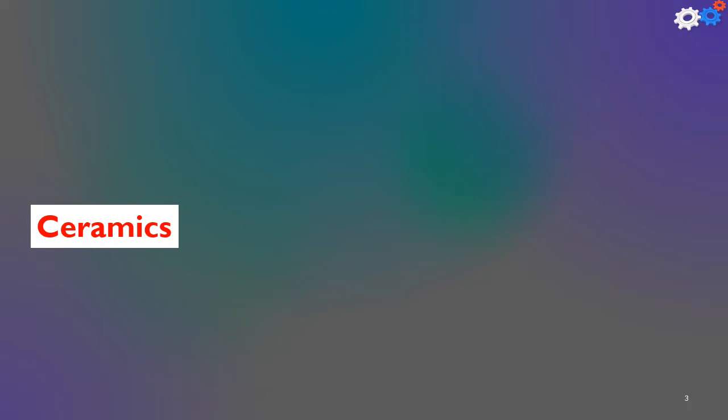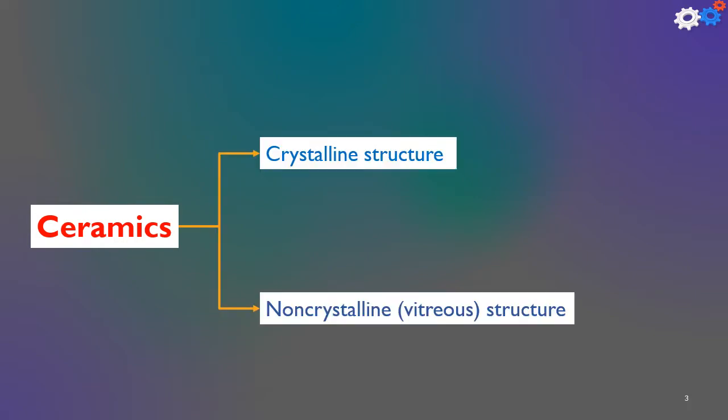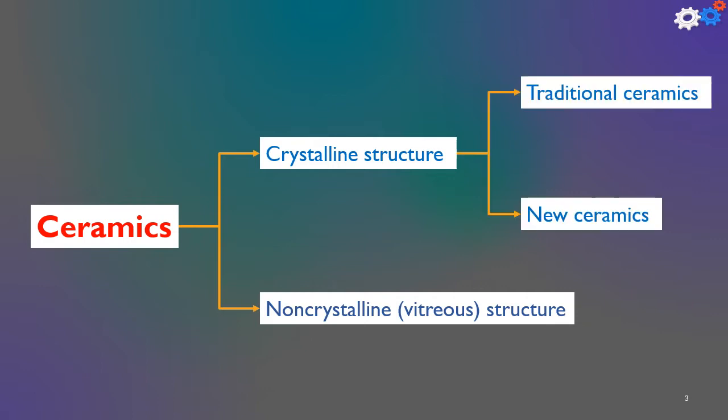Ceramics are classified into two main types: the crossline structure and the non-crossline structure. The crossline structure includes traditional ceramics and new ceramics, while the non-crossline structure is what is known as glass.